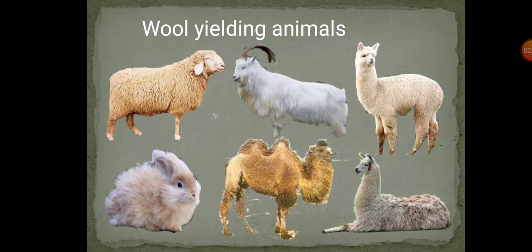Australia is the leading producer of wool in the world. Besides sheep, we get wool from camel, alpaca, and llama, especially in South America. Yak wool is common in Tibet and Ladakh. Kashmiri wool fibers are obtained from the Kashmiri goat; the under-hairs of the Kashmiri goat are used to make very fine shawls, which are famous worldwide as the pashmina shawl.